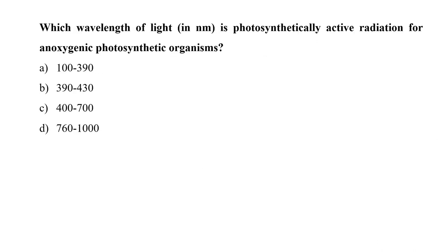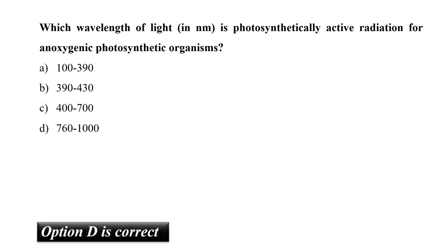The next question is: which wavelength of light is photosynthetically active radiation for anoxygenic photosynthetic organisms? There are two types of photosynthetic organisms: oxygenic and anoxygenic. Most oxygenic photosynthetic organisms utilize the region of the solar spectrum from 400 nm to 700 nm, known as photosynthetically active radiation (PAR). Anoxygenic organisms absorb strongly in the infrared region between 700 nm and 1000 nm. So our correct option is D, that is 760 to 1000 nanometers.